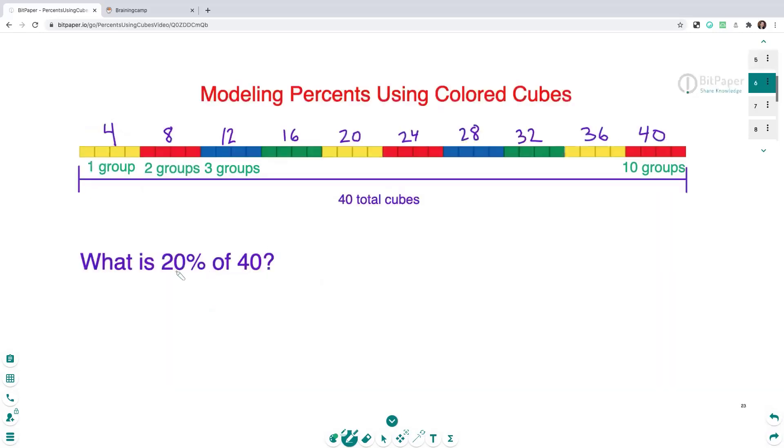And now let's try to find 20% of 40. So to recap, we know that 10% equals four, 5% was two. So 20% is twice as large as 10%. And so if 10% is four cubes, then 20% is going to be double the amount of that. So 20% is going to be these two groups, which will be eight cubes.